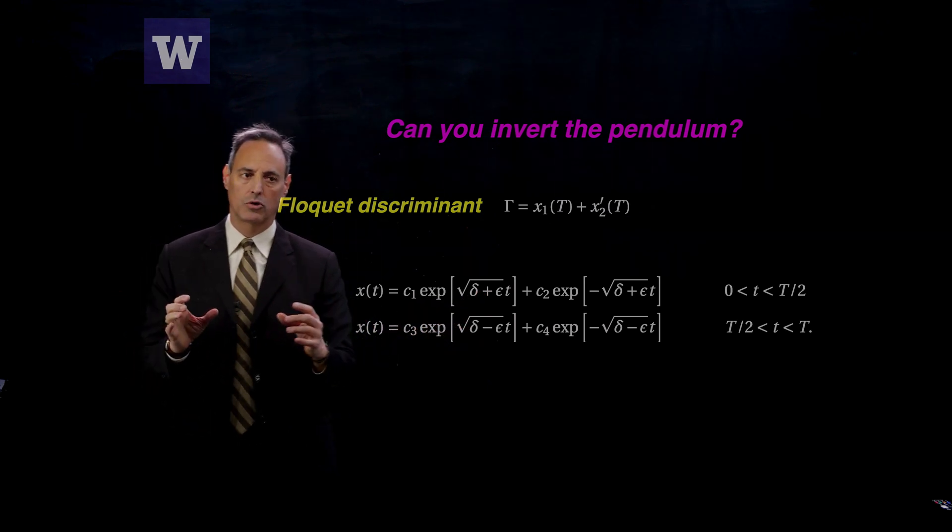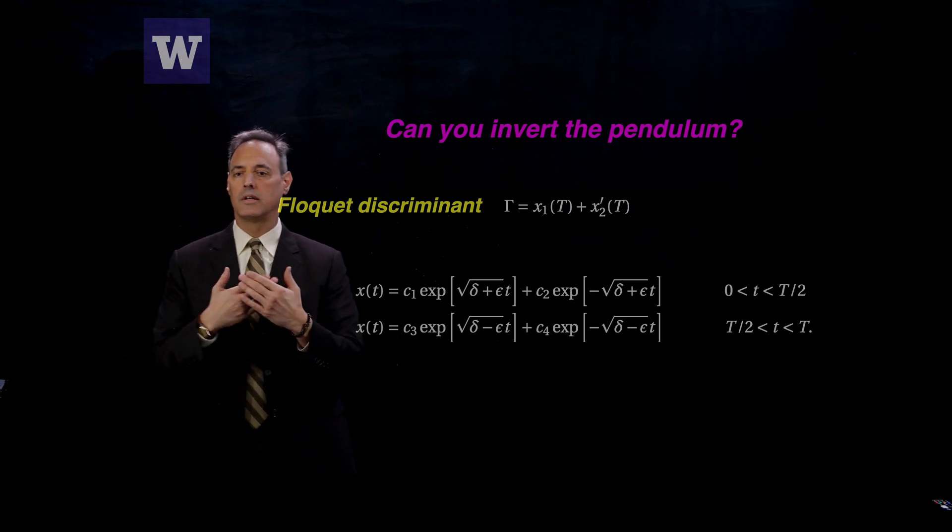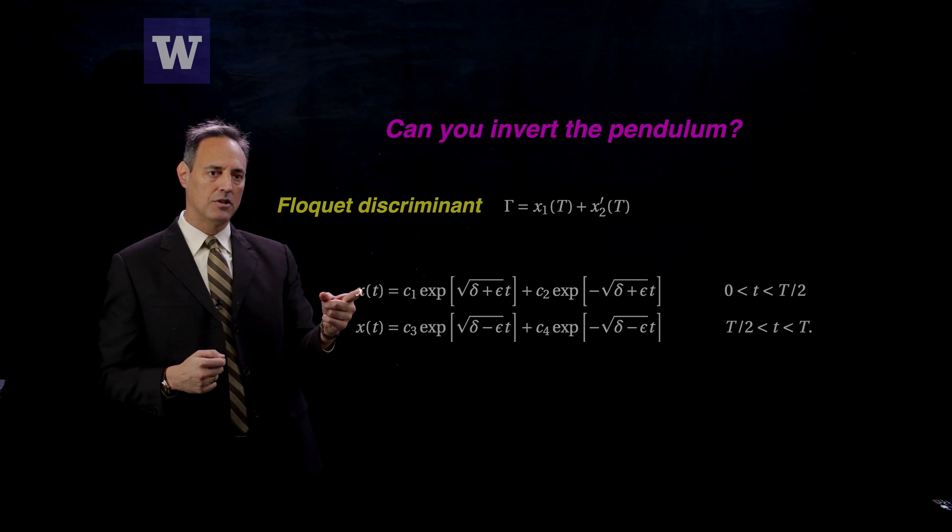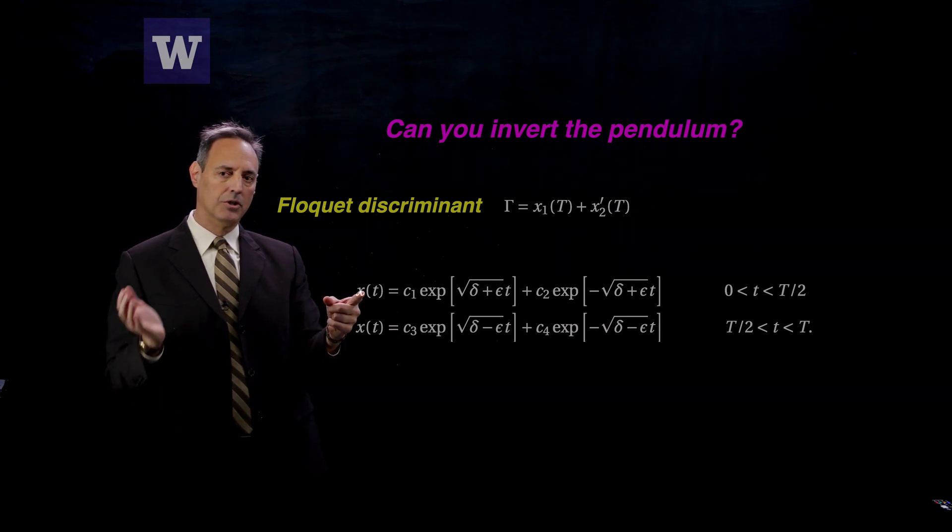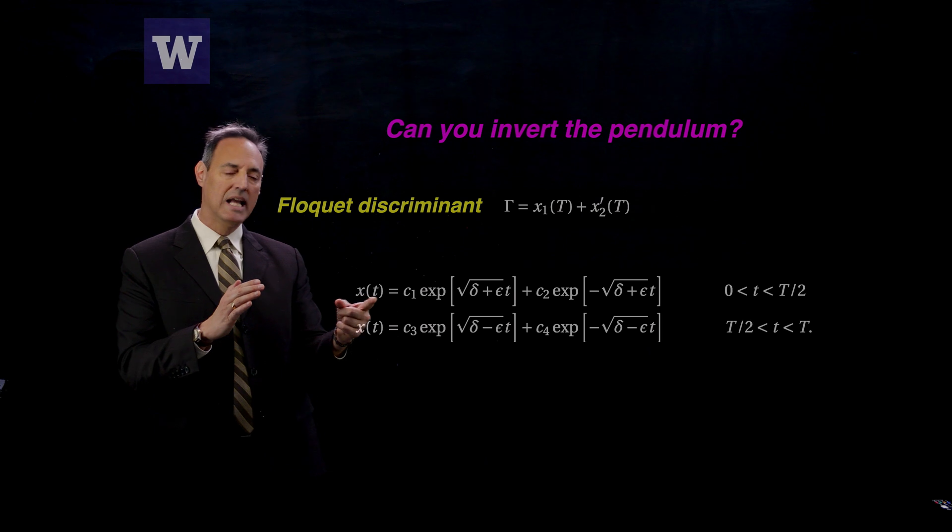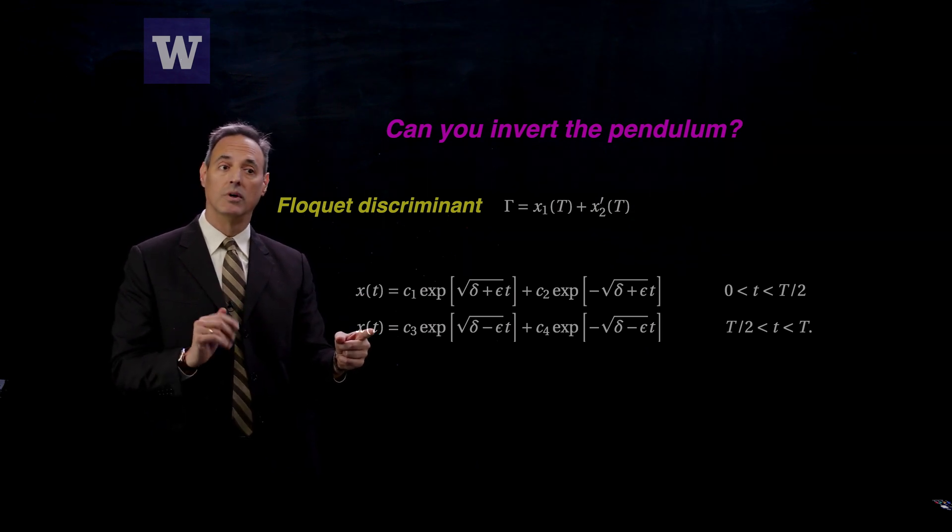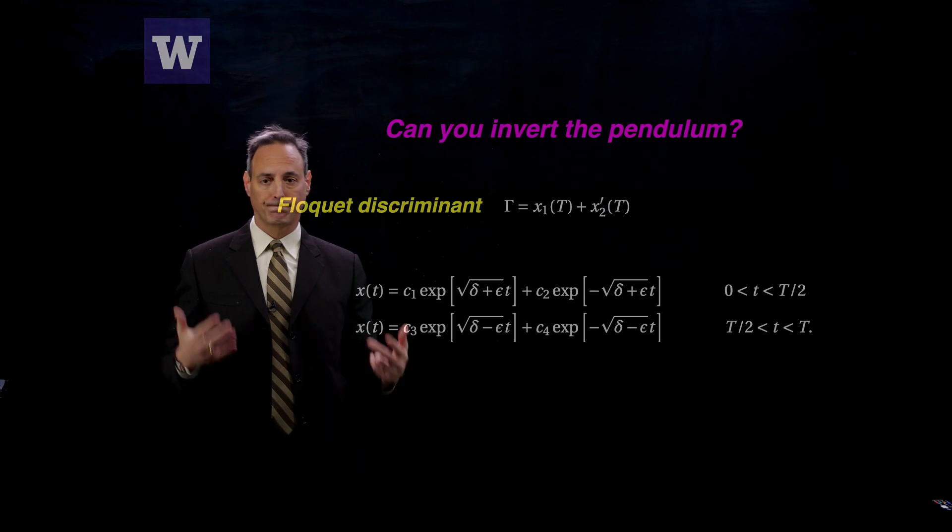And then, so those are the two solutions, and for me to construct a solution from time 0 all the way to capital T, the initial condition of this, I run it from time 0 to time t over 2, and that's the initial condition now for the second part which runs from t over 2 to capital T.